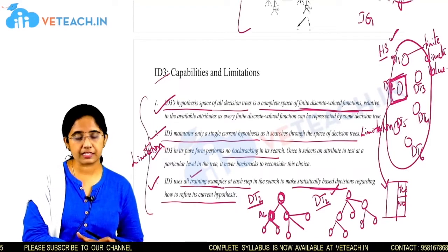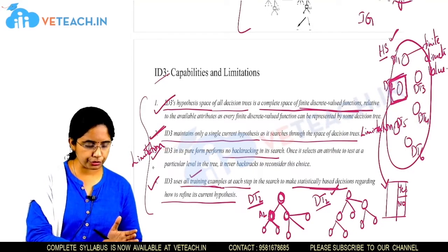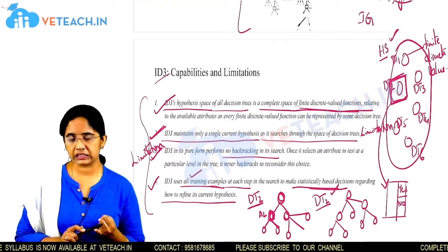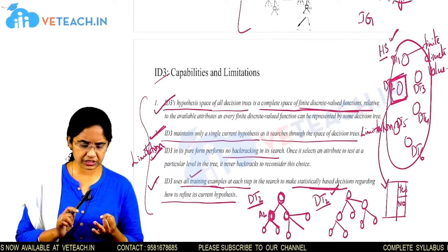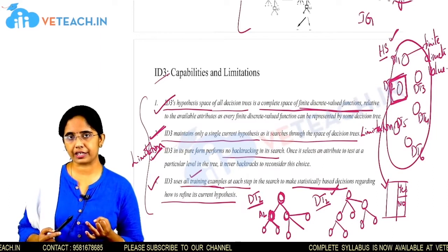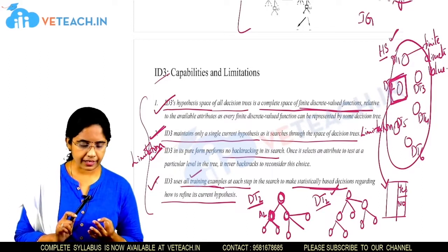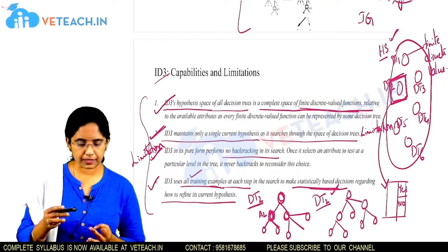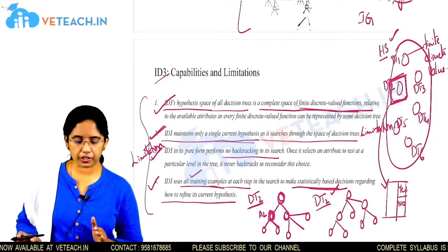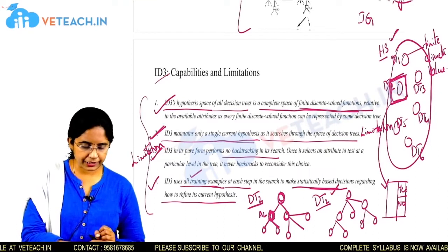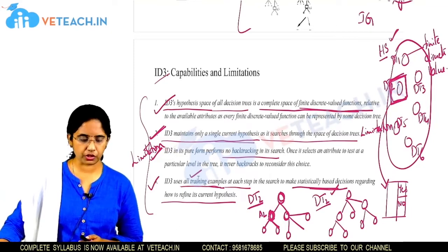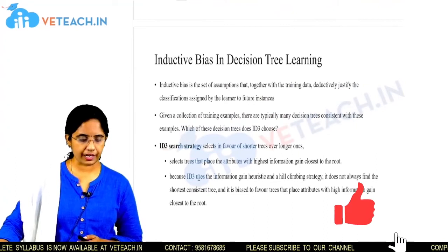To summarize: points two and three are considered limitations, while the others are capabilities. The hypothesis space consists of finite discrete value functions. Second, once we start constructing a decision tree by calculating information gain, we cannot go back. Third, once we fix to a single current hypothesis, it is continuously extended until all instances are completed. Fourth, ID3 uses all training examples to generate the decision tree structure. These are the capabilities and limitations of the ID3 algorithm.